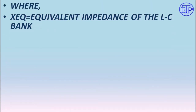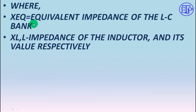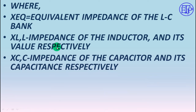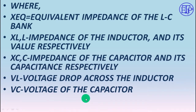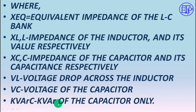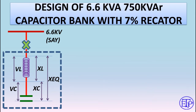The following terminologies will be used: XEQ stands for equivalent impedance of the LC bank; XL and L stand for the reactance and inductance in Henry of the inductor; XC and C stand for the impedance and capacitance of the capacitor; VL means voltage drop across the inductor; VC means voltage of the capacitor. KVAR refers to the KVAR of the capacitor only — not the entire bank. The bank KVAR is 750 KVAR, but this is only the KVAR of the capacitor itself.